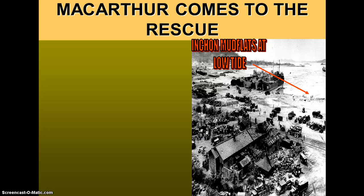Truman then gave the order to pursue the North Koreans beyond the 38th parallel and go north. MacArthur went all the way — we filled this in on our map as well — all the way to the Yalu River, which is the border of China. We're going to pause here because tomorrow's screencast will cover how China enters the war, the trouble between Truman and MacArthur, and the results of the Korean War.